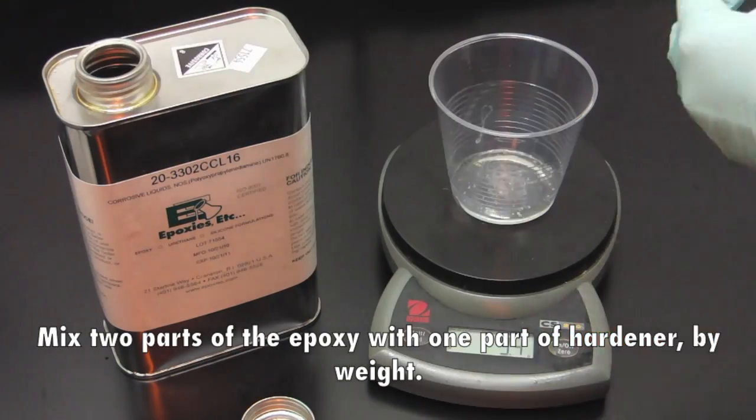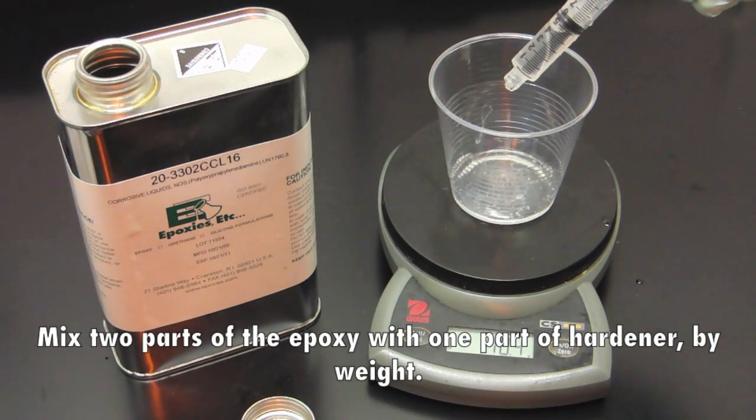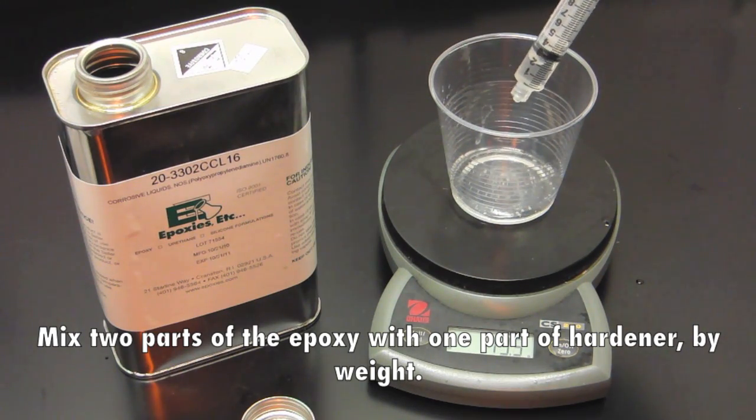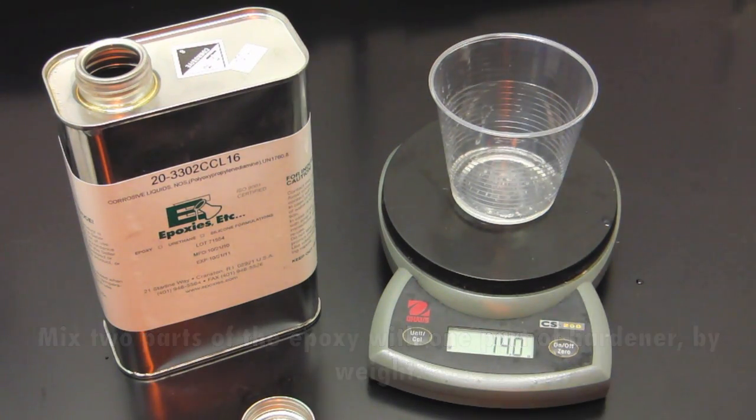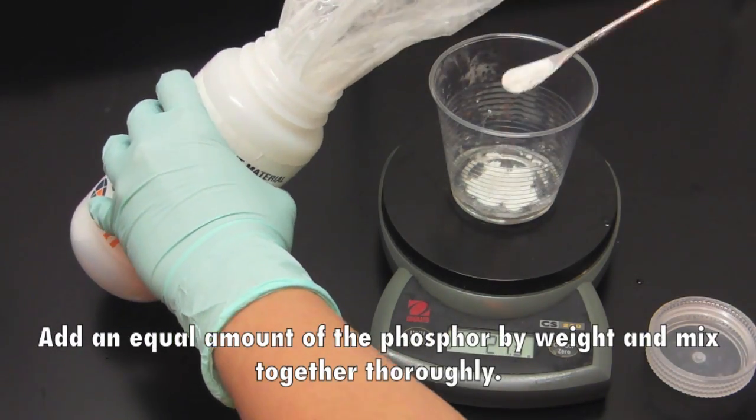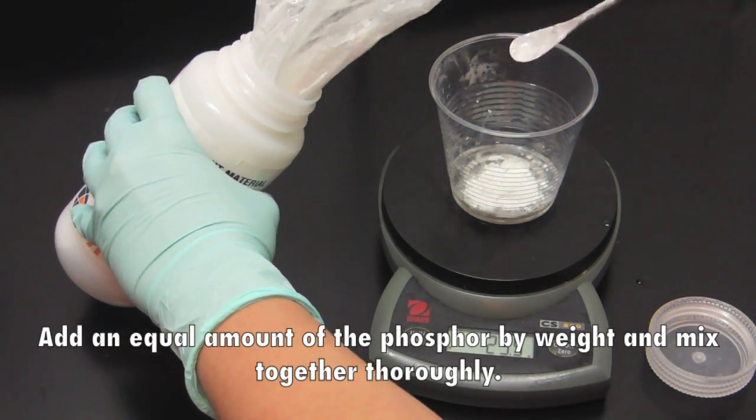Mix two parts of the epoxy with one part of hardener by weight. Add an equal amount of phosphor by weight and mix together thoroughly.